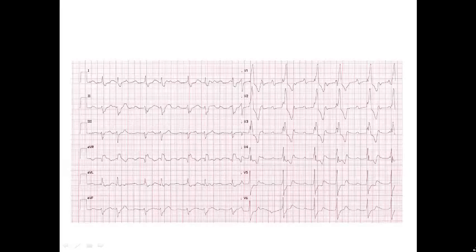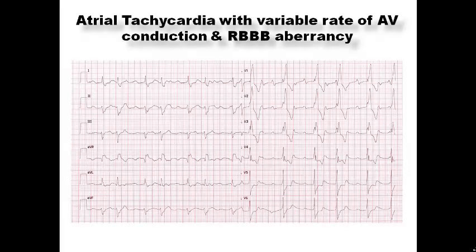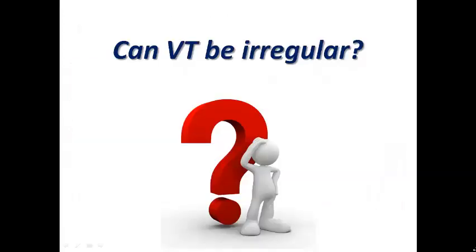Let's see this example. We have an irregular wide complex tachycardia — the heart rate may not be very rapid here — but we can see P-waves present between the complexes: sometimes three P-waves between complexes, sometimes two. This patient has atrial tachycardia with variable AV conduction and right bundle branch block appearance, presenting as irregular wide complex tachycardia. This is not a very common example in practice, but remember that atrial tachycardia and atrial flutter can also present with irregular wide complex tachycardia.